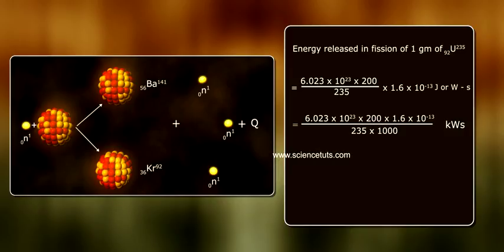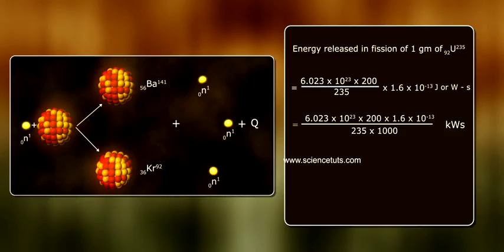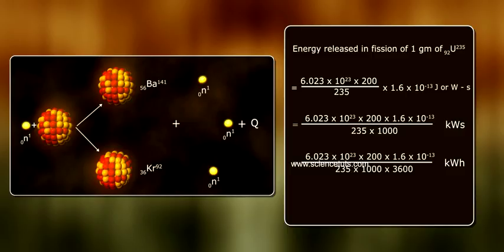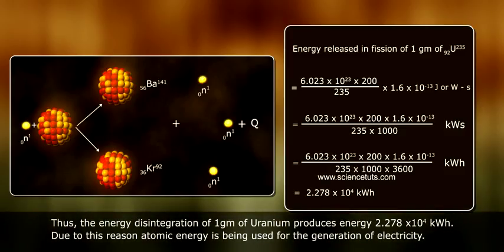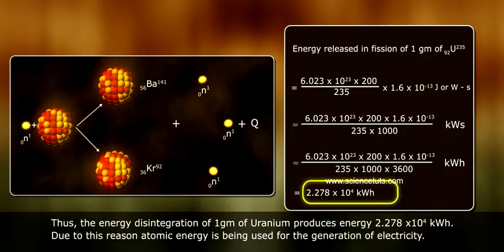Continuing the calculation: (6.023 × 10²³ × 200 × 1.6 × 10⁻¹³) / (235 × 1000) kilowatt-seconds, then dividing by 3600 gives kilowatt-hours. This equals 2.278 × 10⁴ kilowatt-hours. Thus, the energy from disintegration of 1 gram of uranium produces 2.278 × 10⁴ kilowatt-hours of energy.